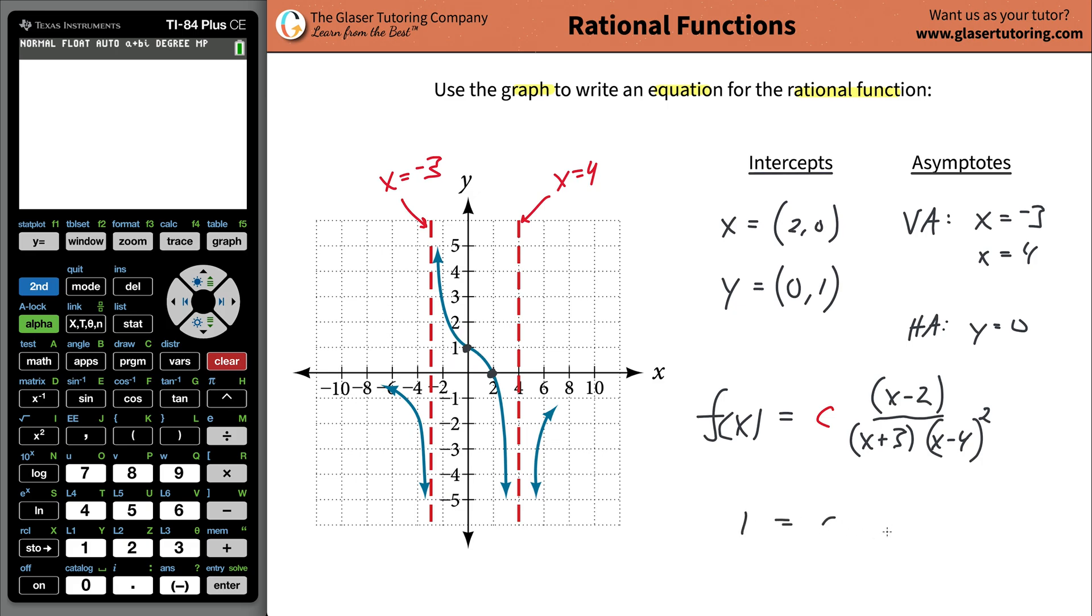I'm going to write 1 equals some constant c, and everywhere I have x, I'm going to plug in 0. So it's c times 0 minus 2 divided by 0 plus 3 times 0 minus 4 squared. Then we're going to have c times negative 2 on the top, then 3 times positive 16 on the bottom. That's going to be 48.